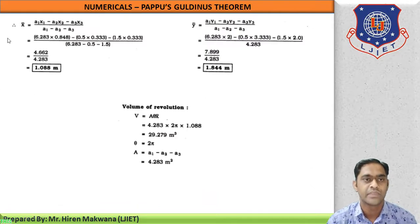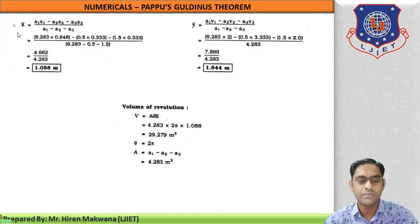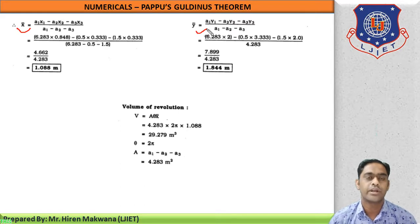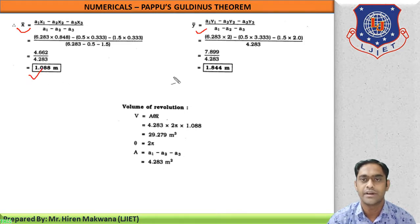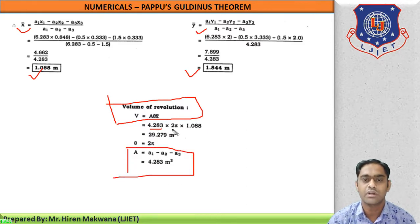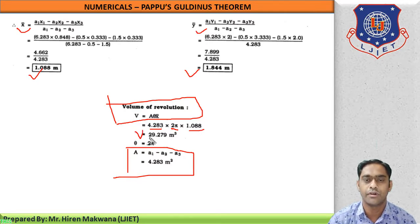Now let us calculate x-bar and y-bar. From part 1, parts 2 and 3 are subtracted. By replacing the values, we get x-bar equal to 1.08 meters and y-bar equal to 1.84 meters. The main calculation is the volume of revolution, equal to A × theta × x-bar. The total area is A1 minus A2 minus A3, and theta is always 2pi radians for a full 360-degree revolution. Substituting all values and performing the calculations gives a volume of 29.279 cubic meters.